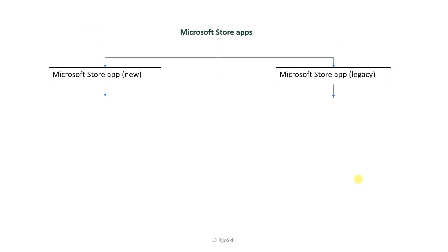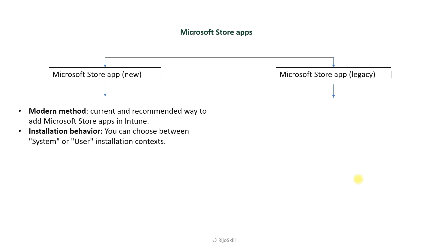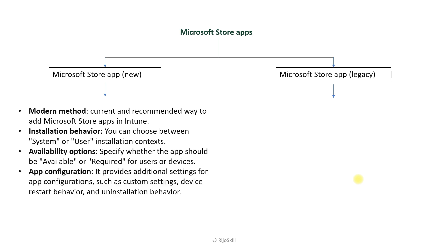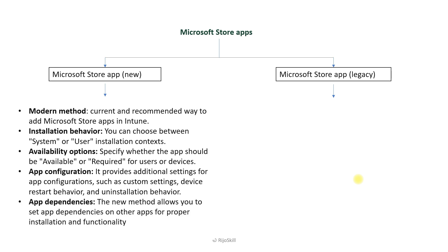The Microsoft Store App new method is the modern, current, and recommended way to add Microsoft Store Apps in Intune. With the installation behavior, you can choose between system or user installation context. Availability options specify whether the app should be available or required for the user or device. App configuration provides additional settings such as custom settings or device restart behavior, uninstall behavior, and support for app dependency — allowing you to set dependencies on other apps for proper installation and functionality.